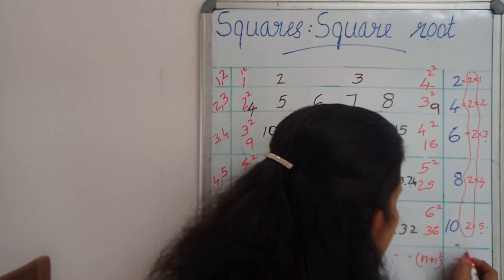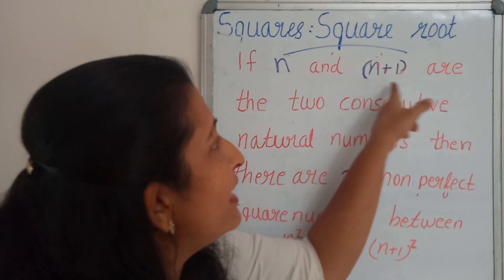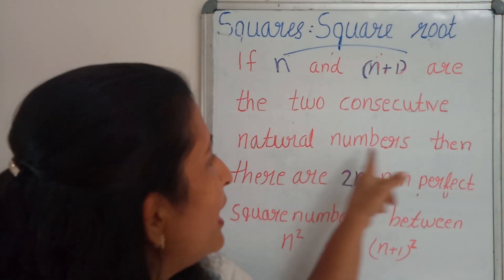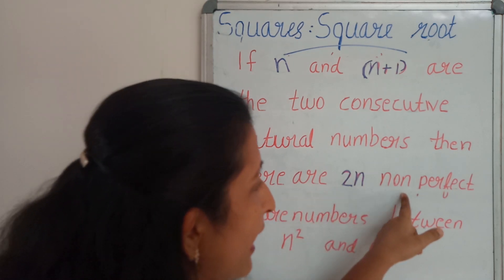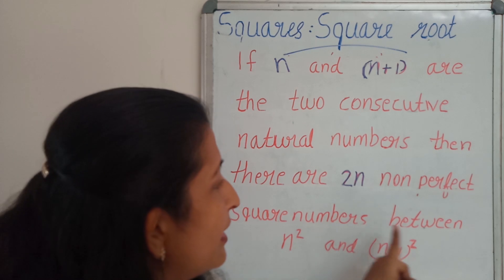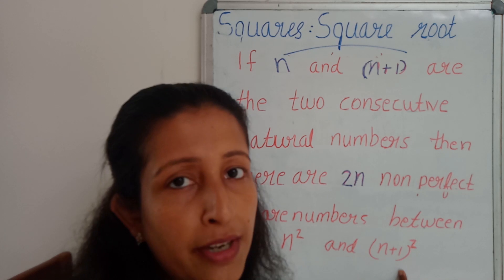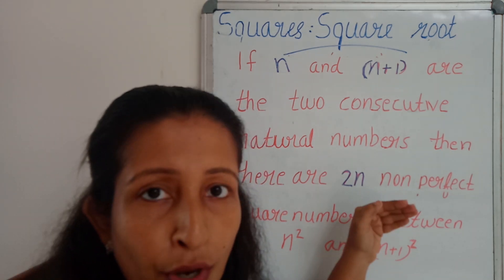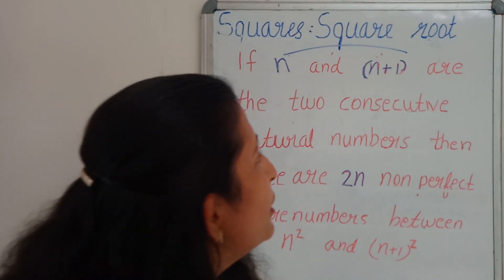The property says that if n and n+1 are the two consecutive natural numbers, then there are 2n non-perfect square numbers between n square and (n+1) whole square — which are the squares of our consecutive natural numbers. I hope you enjoyed my class.